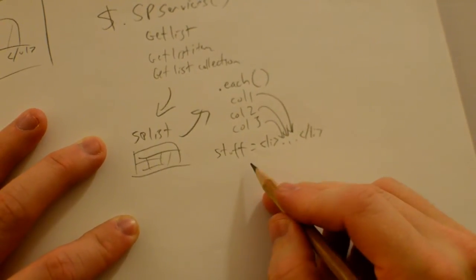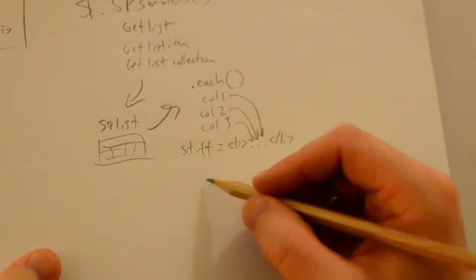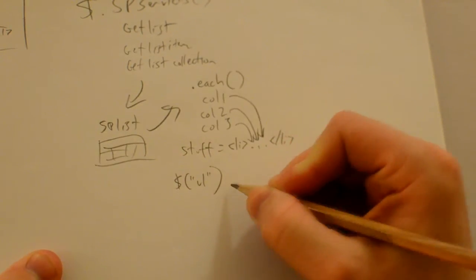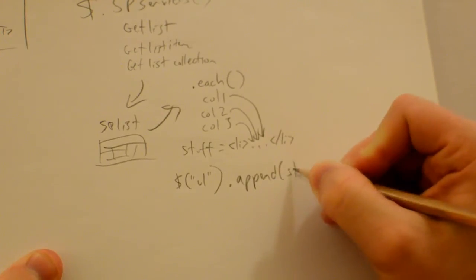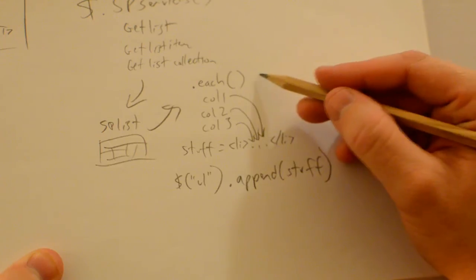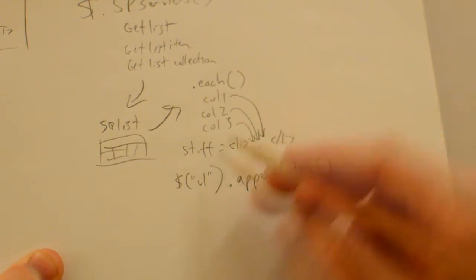Then I'm going to take this variable and append it to the unordered list we made. So using jQuery, I'm going to find my unordered list and append stuff. Note that we're still inside this each function, so each time it finds a row from this list, it's going to run through all these things.